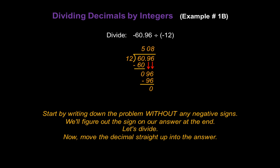Now move the decimal straight up into our answer, just like we did last time. And figure out the sign on your answer. Since both numbers are negative, our answer is going to be positive 5.08.